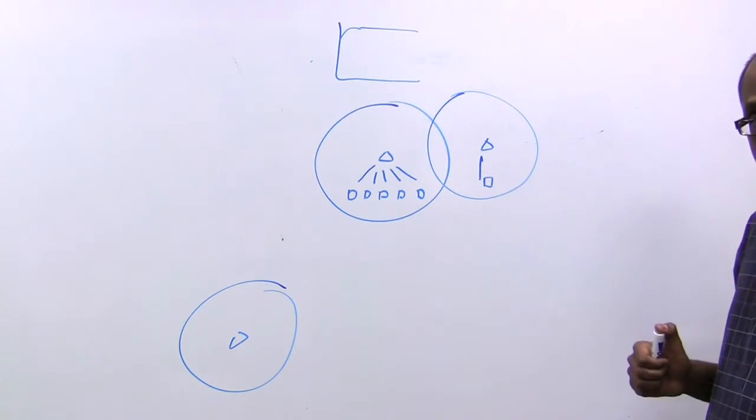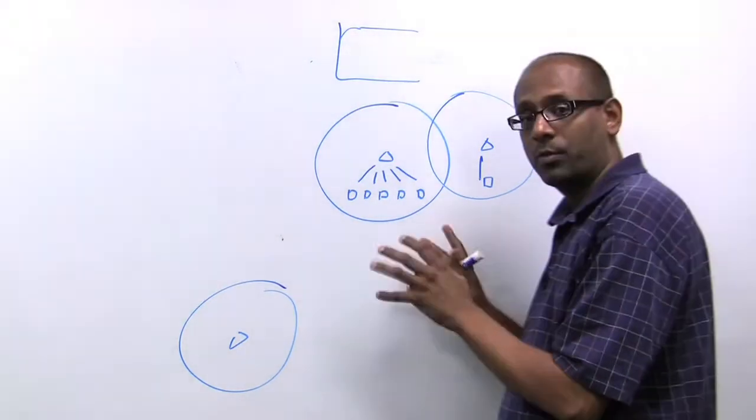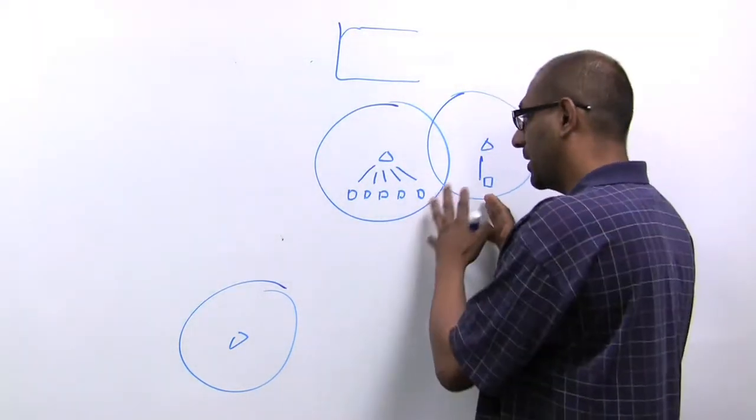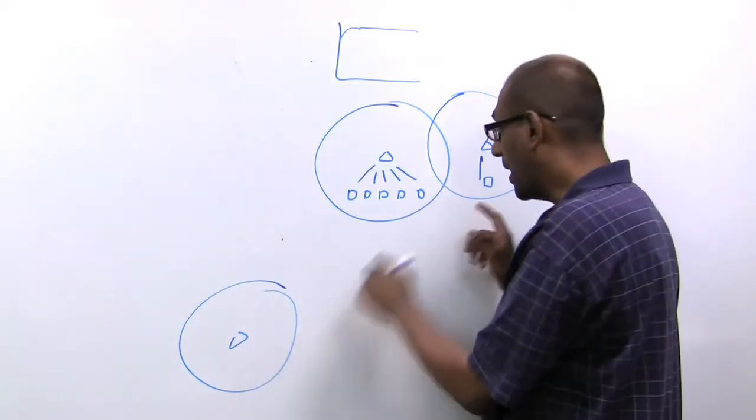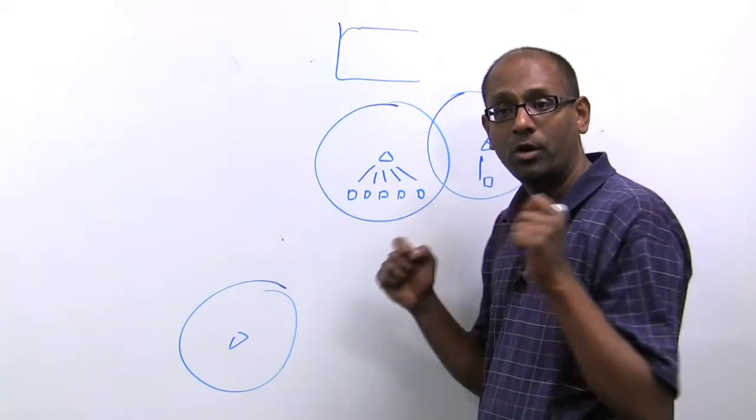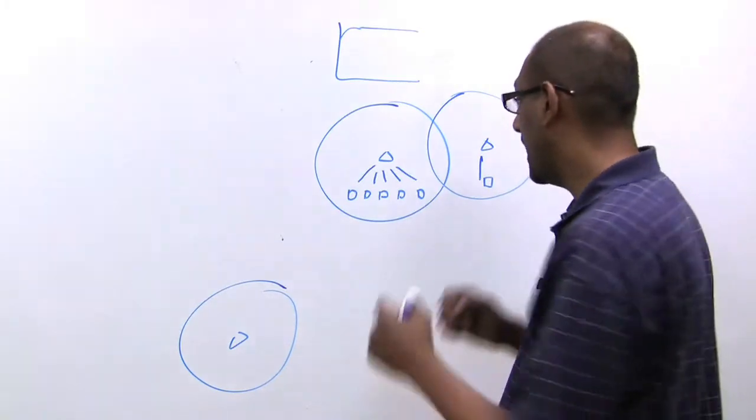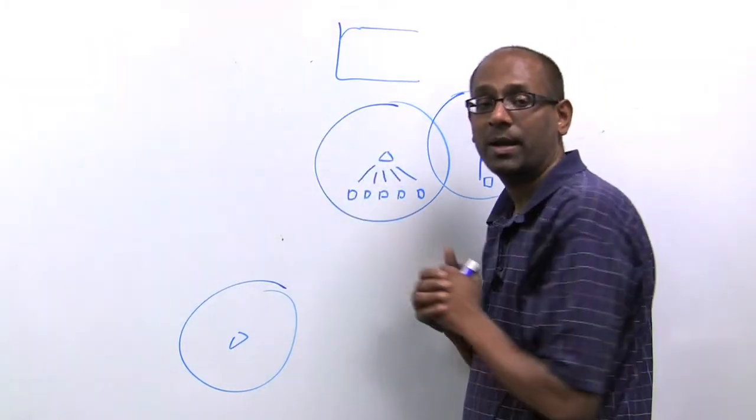It is really important in order to build a network that scales to ensure that access points that are on the same channel understand the load on that channel and then advertise or adjust these contention parameters appropriately.